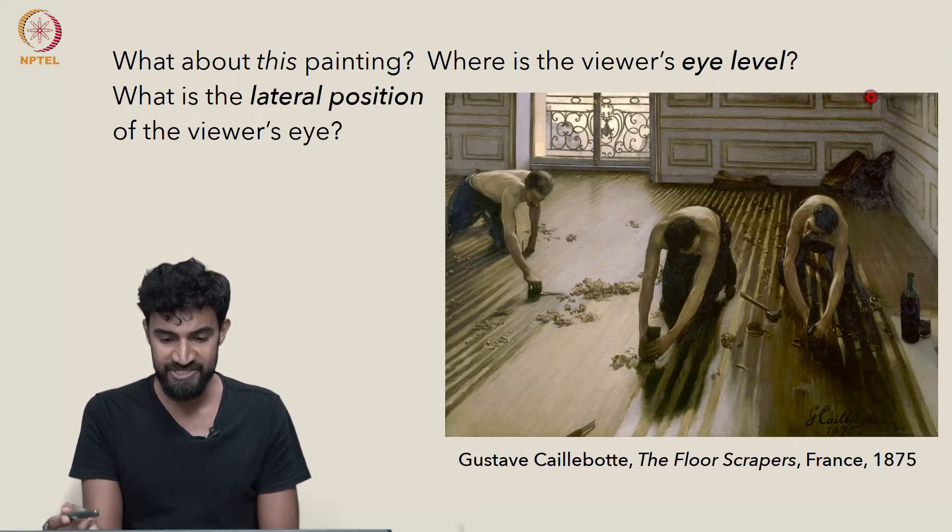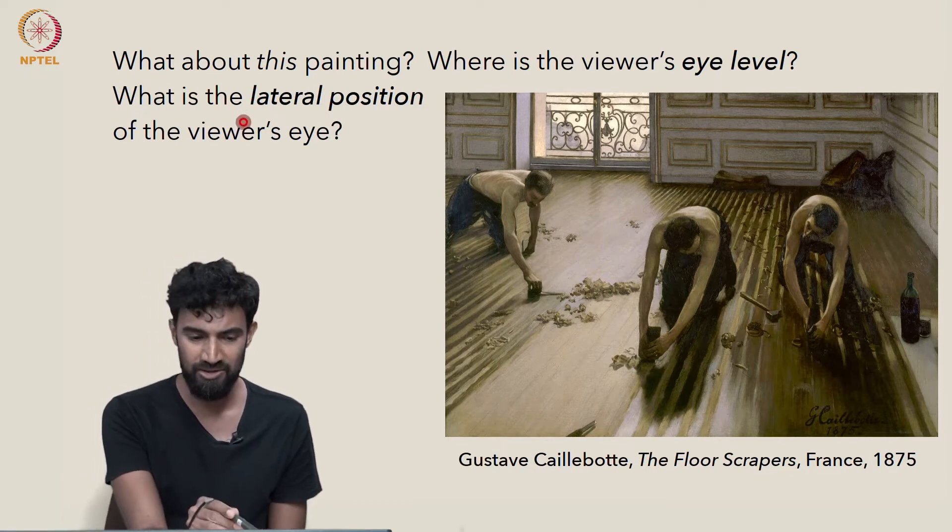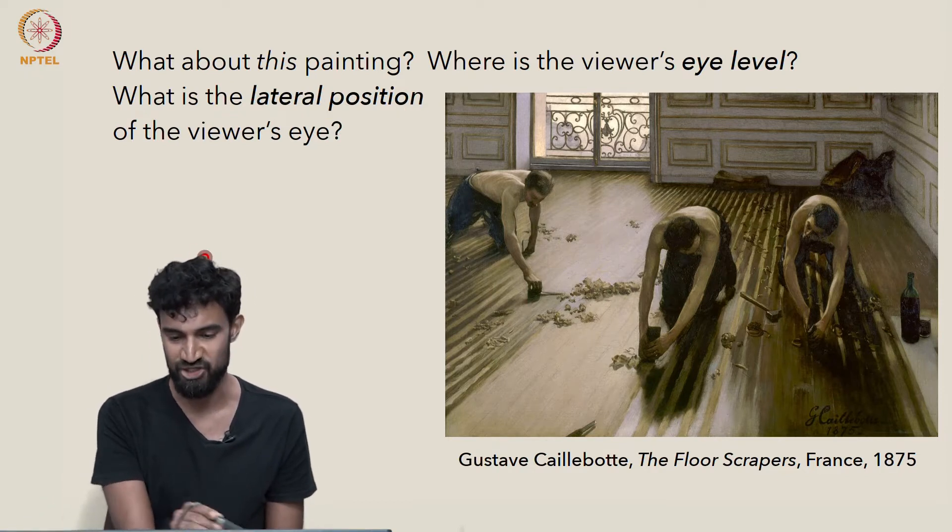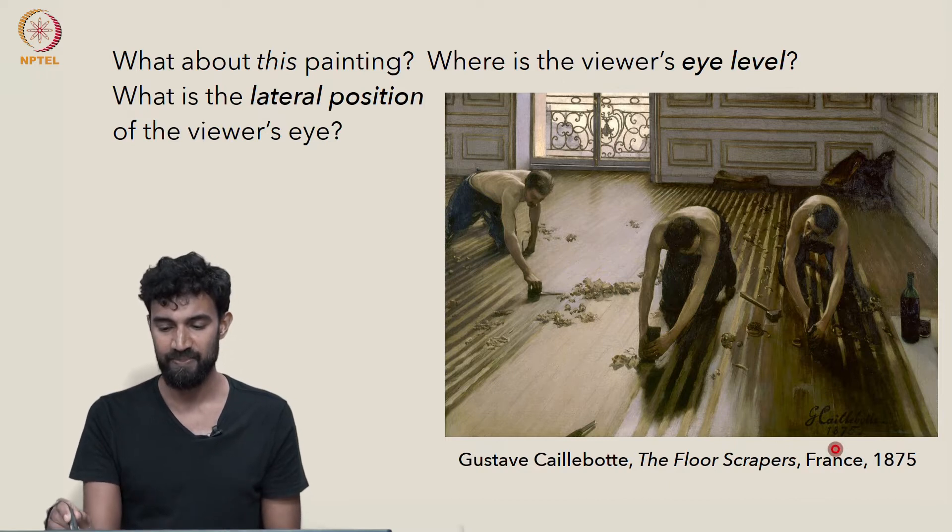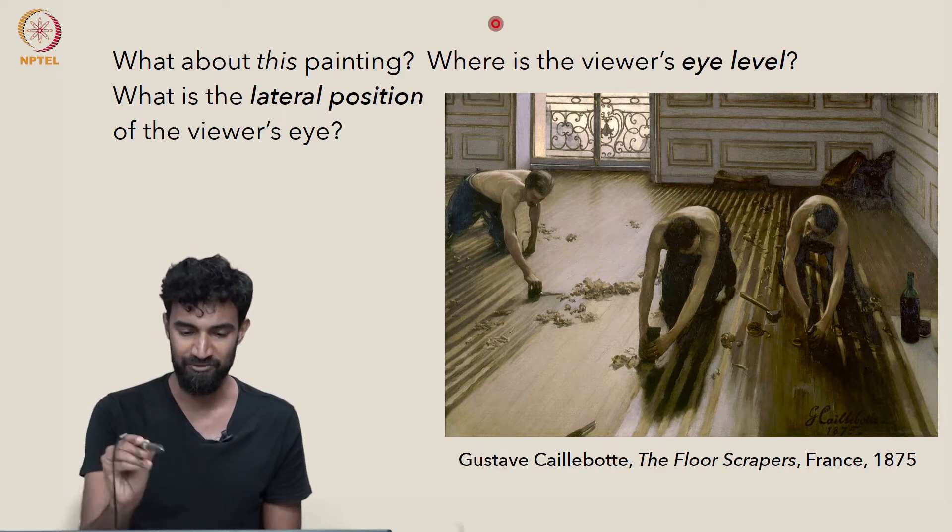And this painting here is another good example. Again, where is the eye level? And also, what's the lateral position of the viewer's eye? In other words, is the viewer standing somewhere around here? Or maybe around here? Or maybe all the way over here?